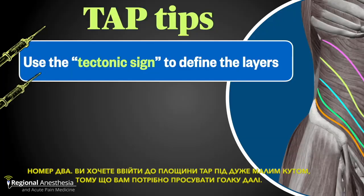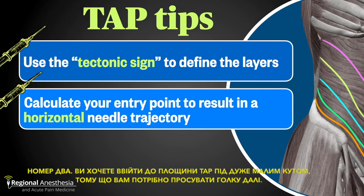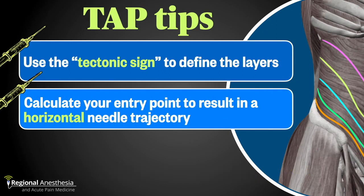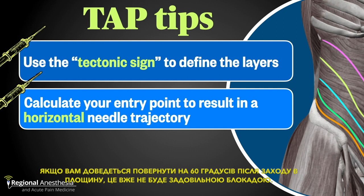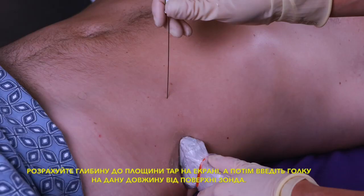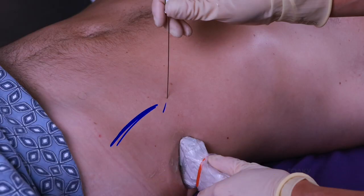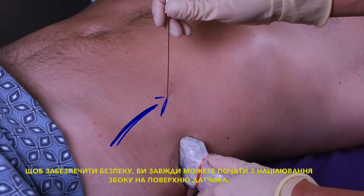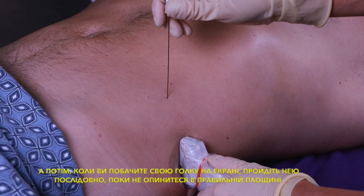Number two: you want to hit the TAP plane at a very shallow angle, because you need to move that needle along. If you have to turn a 60-degree corner after hitting the plane, it's not going to be a satisfying block. Calculate your depth to the TAP plane on the screen, and then insert your needle that far out from your probe surface. To hedge for safety, you can always start by aiming laterally at your probe surface, and once you see your needle on the screen, walk it down sequentially until you're in the correct plane.